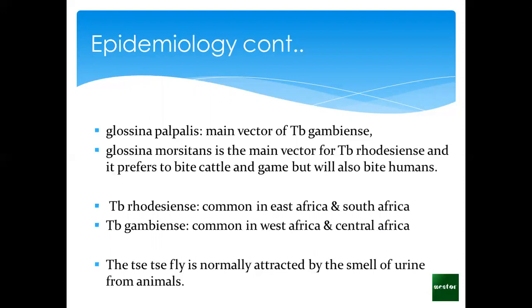One more thing to know, which is also relevant for prevention: the tsetse fly is normally attracted by the smell of urine from animals. That's why in bushy areas or game parks, when animals are urinating around everywhere, that attracts the tsetse fly. There is actually a fly trap for tsetse flies. The way they prepare it is by putting some urine from these animals and setting up a trap, so when the tsetse fly is attracted, they come and are trapped.